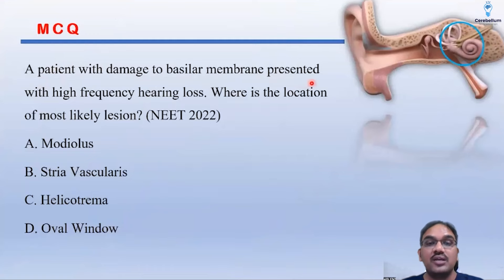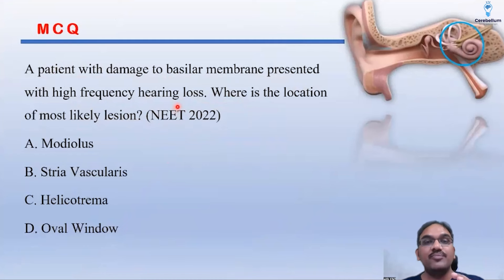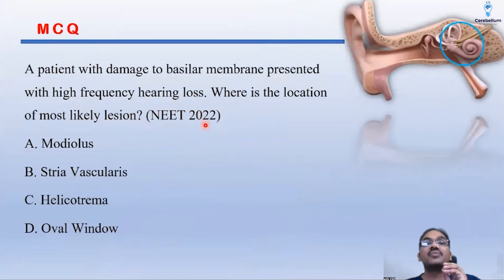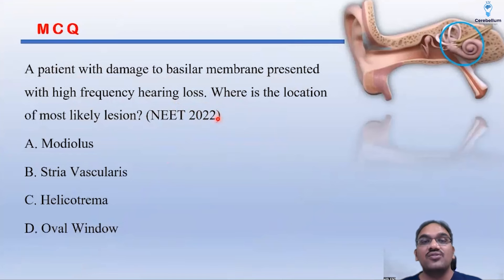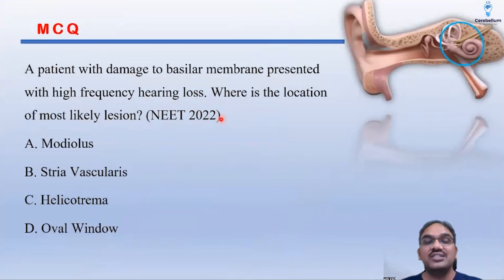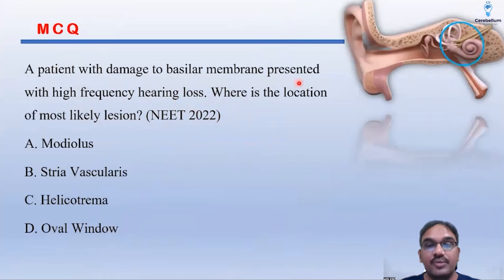A patient with damage to the basilar membrane presented with high frequency hearing loss. Where is the location of the most likely lesion? The examiner could have directly asked about the damage, but here it's applied slightly differently: a patient with damage to the basilar membrane presenting with high frequency hearing loss — where is the location of the most likely lesion?